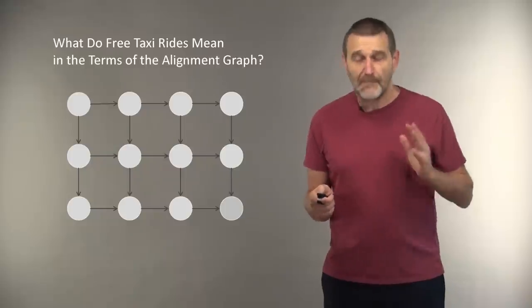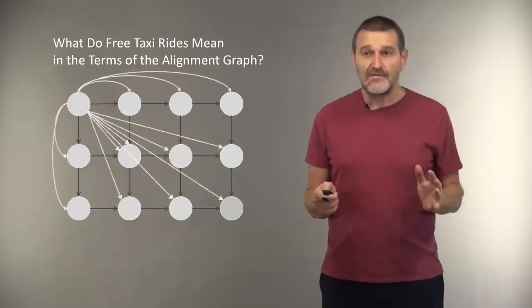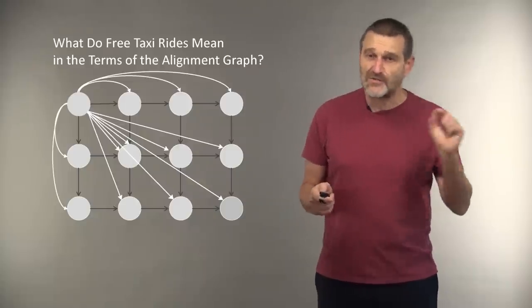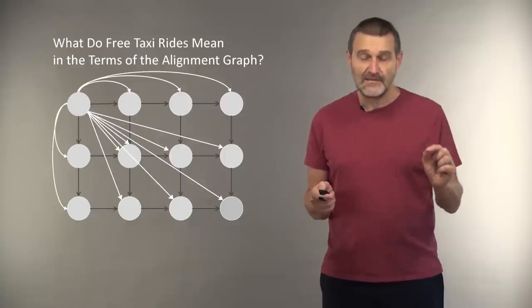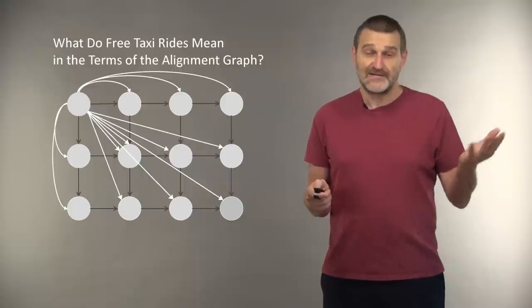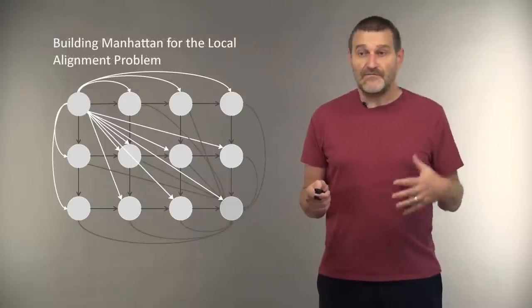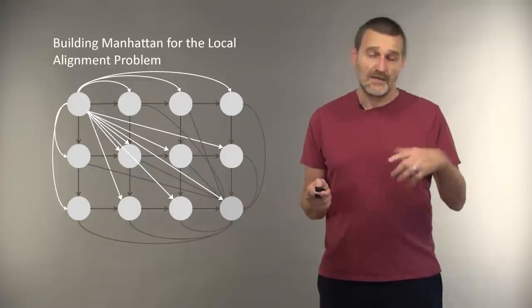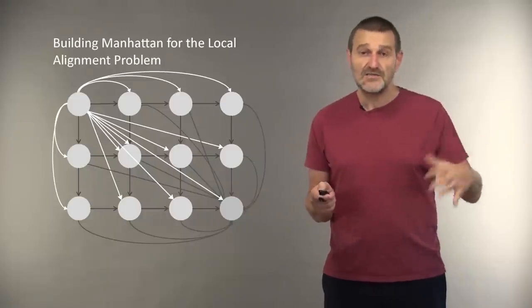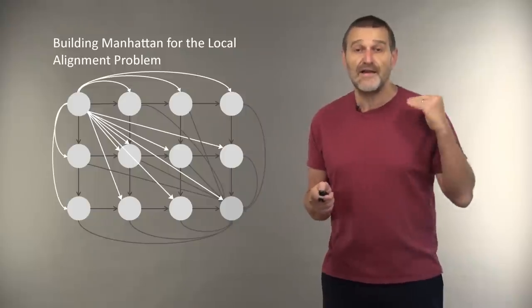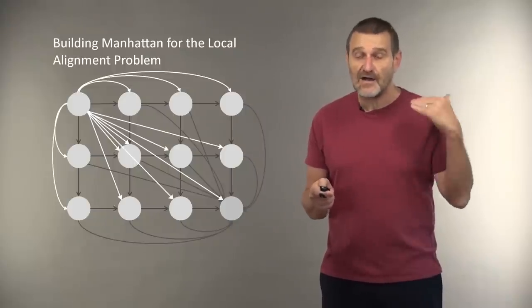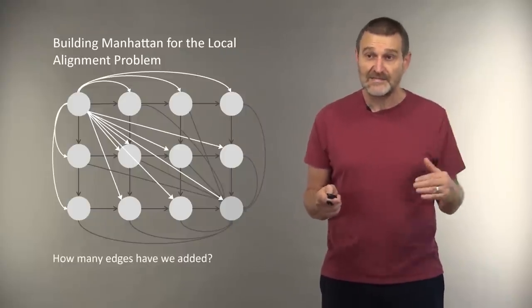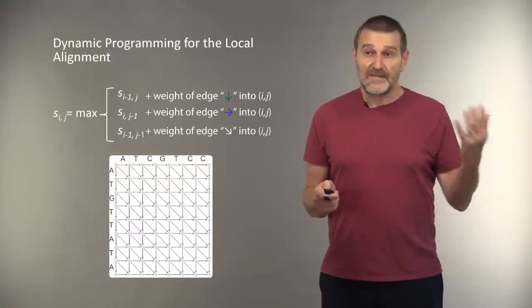So let's see how our graph change. What we need to do to implement this free taxi ride? We need to add edges from the source to any other node. And it will be roughly a quadratic number of edges. We also need to add edges from every node to the sink, once again, quadratic number of edges. So the number of edges in the graph remains quadratic. And therefore, our algorithm will be fast. And in the end,